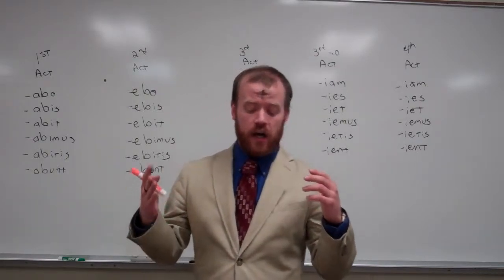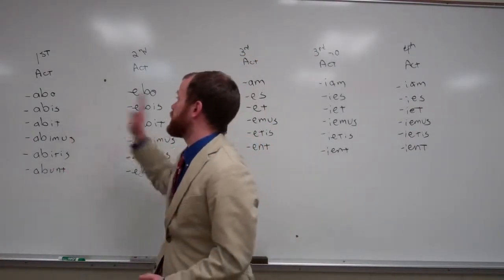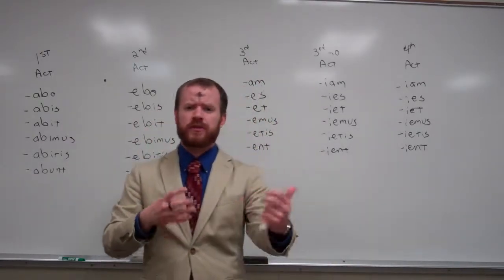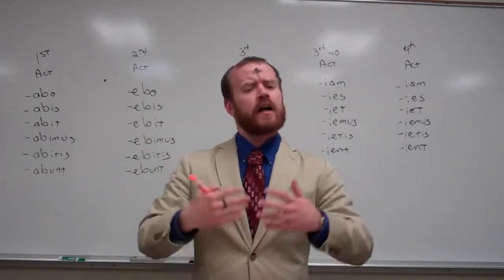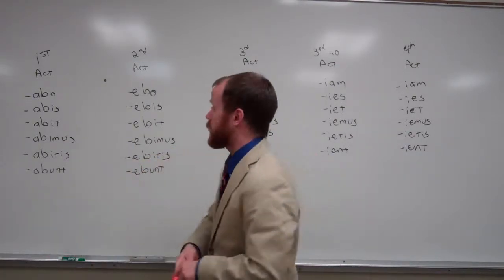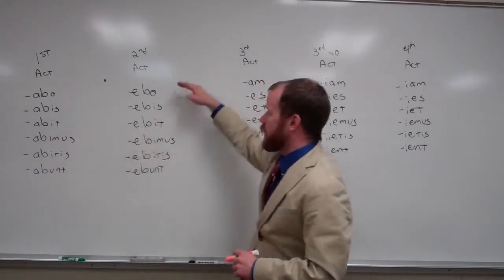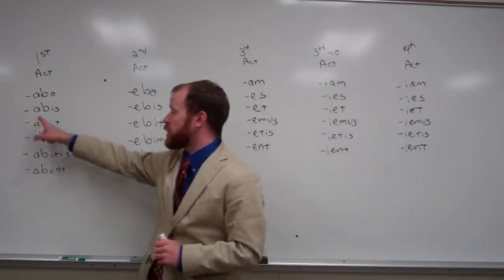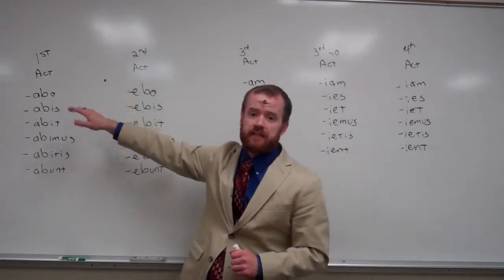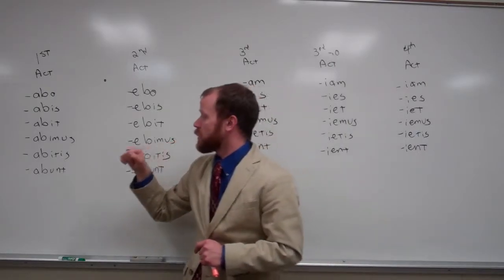So in the future system, there's two sets of endings. For the first and second conjugation, we have what's known as a tense indicator. We've seen these before, it's the BA in the imperfect. So here it goes: bo, bis, bit, bimus, bitus, bot. Same for the second conjugation, we just have to make sure we have the correct connecting vowel. A is for the first, e is for the second.